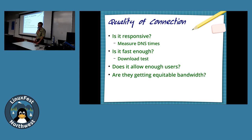Telcos are going to start using 5 GHz. Telcos are pretty tightly regulated in terms of how they use spectrum. Comcast is already using it in all of the residential gateways they put out there — that's why you see Xfinity in your SSID list everywhere.